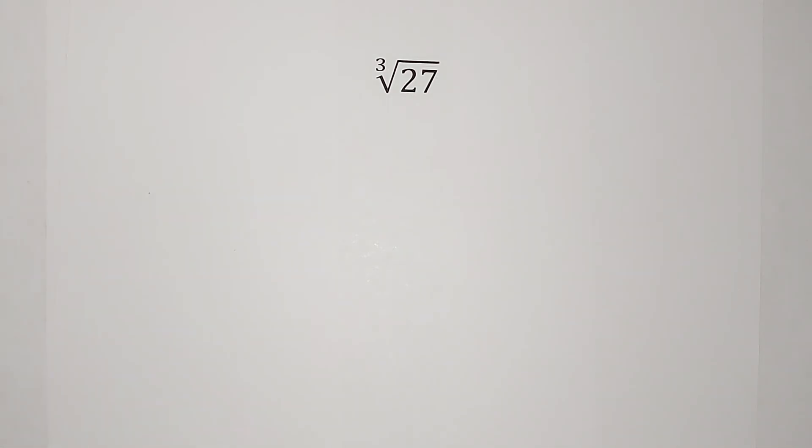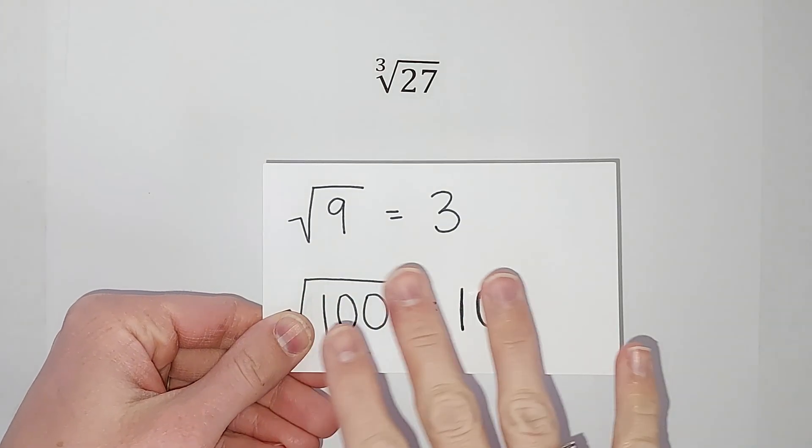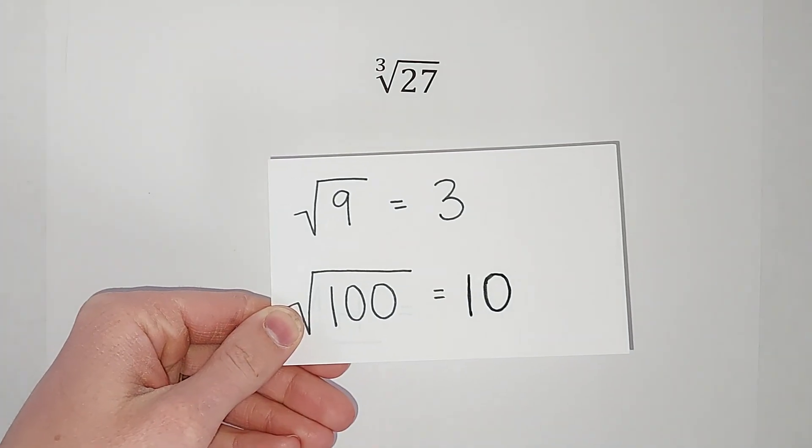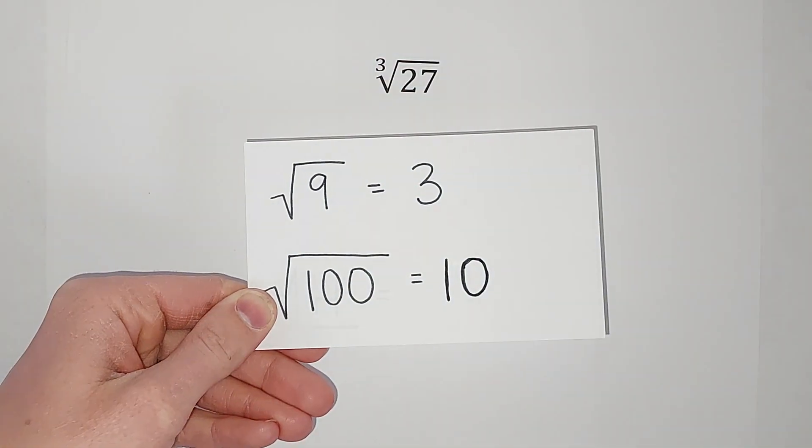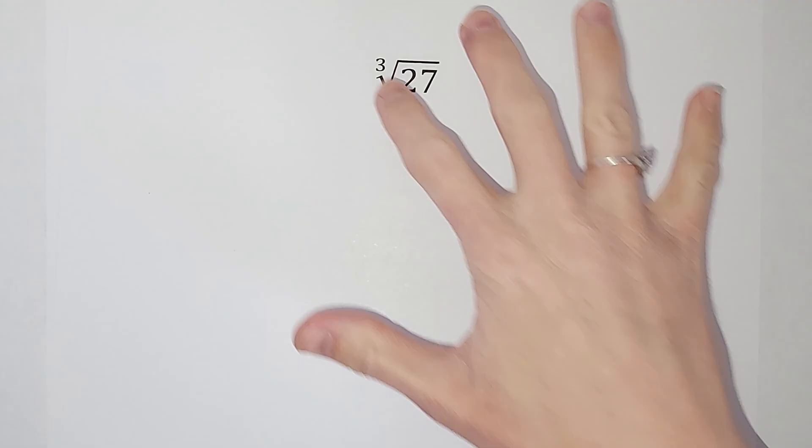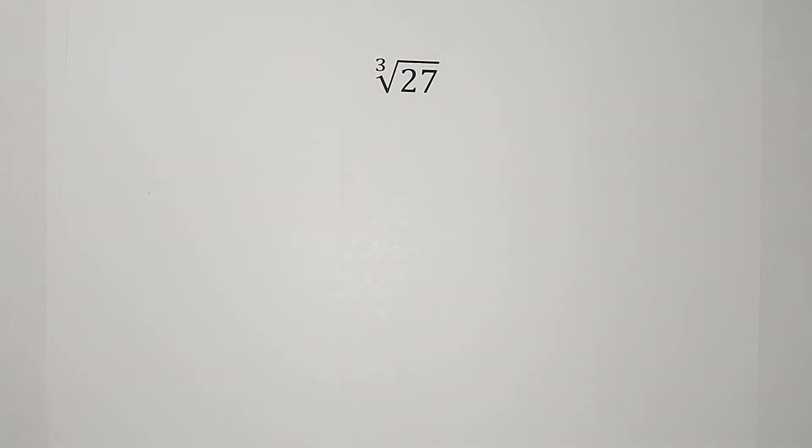Hey guys, you've probably been working with square roots, and then maybe they put a little three here and you were like, what is happening? Okay, so you're probably familiar with square roots. You've probably been doing them for a while, right? Square root of nine is three, square root of 100 is ten, because three times three gives me nine, right? Ten times ten gives me 100.